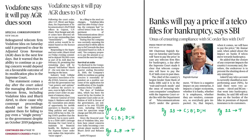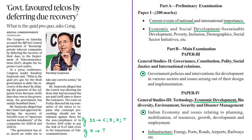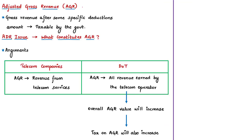The next discussion is related to Adjusted Gross Revenue (AGR) dues by major telecom companies. AGR means the gross revenue after some specific deductions, and this amount is taxable by the government. The issue is what constitutes AGR, which has been a bone of contention between the Department of Telecommunications and telecom operators and has been under litigation since 2005. Telecom companies argued AGR should only comprise revenues from telecom services, while the Department of Telecommunications argued it should include all revenues, including from non-core telecom operations.